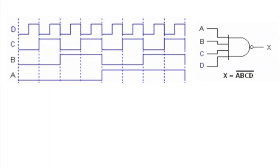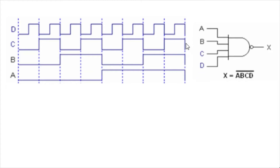In this video I will show you how to draw the output waveform of a four-input NAND gate. This NAND gate has four different inputs, and its function is x = (a·b·c·d)̄. If any one of the inputs is zero, you will get a one output. Only when all four inputs are one will you get a zero output.